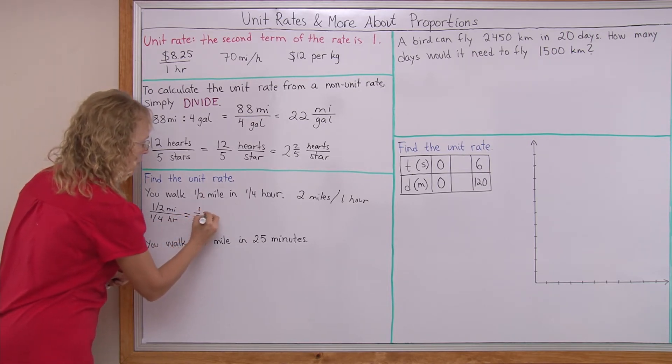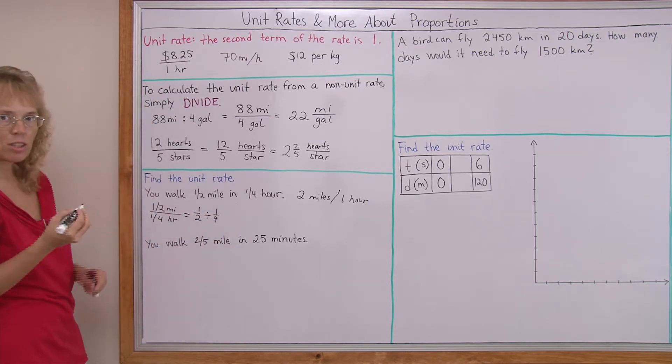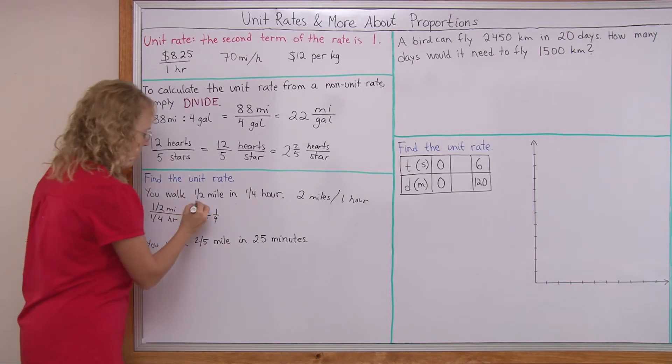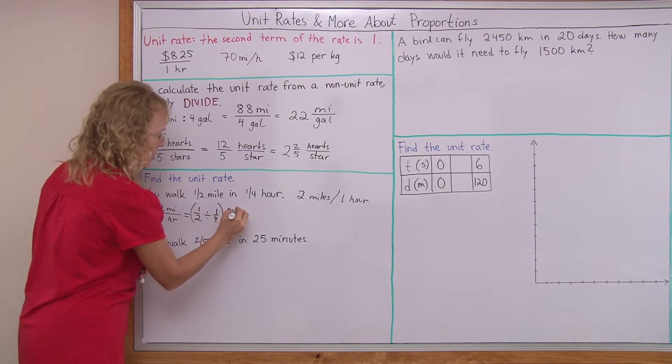I just take one-half divided by one-fourth. And then that's going to be miles per hour.